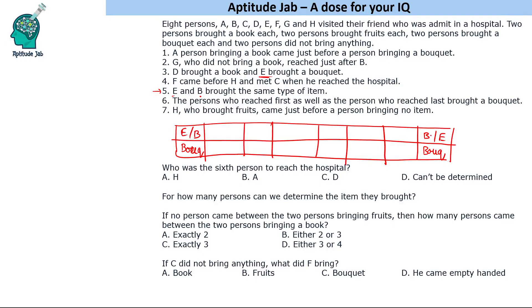Point two says G, who did not bring a book, reached just after B. If G reached after B, then B must be the first person to reach the hospital. So B is first and E is the last person to reach the hospital.